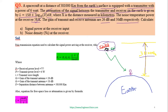We need to calculate the signal power at the receiver input and the noise density at the receiver. We use the Friis transmission equation to calculate the power arriving at the receiver.